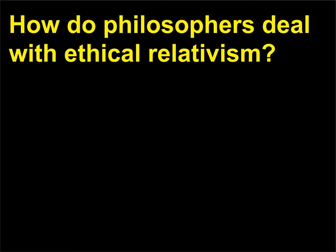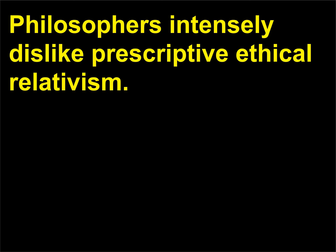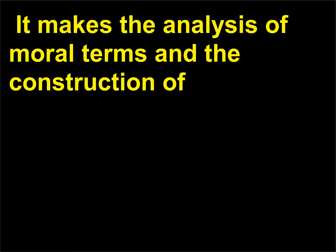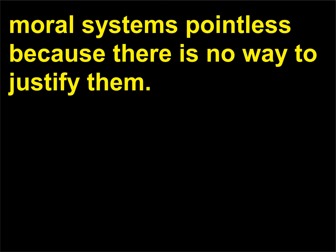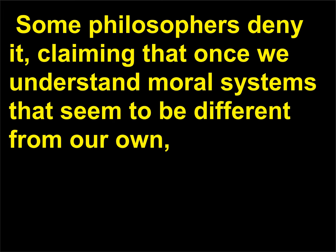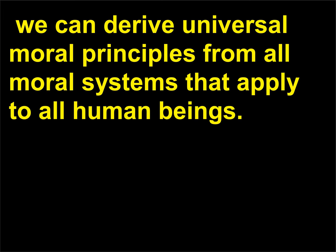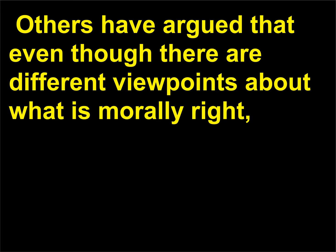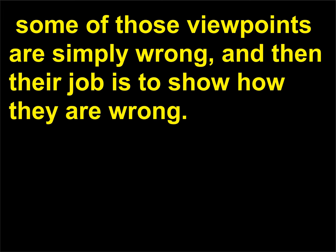How do philosophers deal with ethical relativism? Philosophers intensely dislike prescriptive ethical relativism. It makes the analysis of moral terms and the construction of moral systems pointless because there is no way to justify them. Different positions have been taken about descriptive moral relativism. Some philosophers deny it, claiming that once we understand moral systems that seem to be different from our own, we can derive universal moral principles from all moral systems that apply to all human beings. Others have argued that even though there are different viewpoints about what is morally right, some of those viewpoints are simply wrong, and then their job is to show how they are wrong.